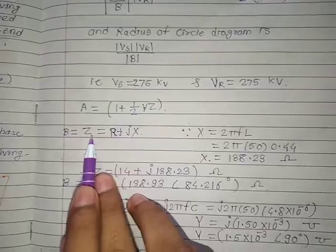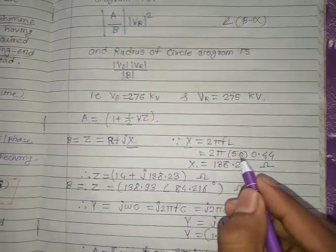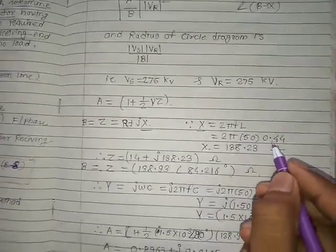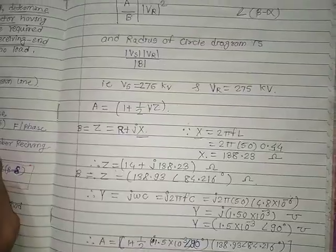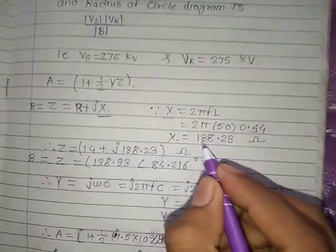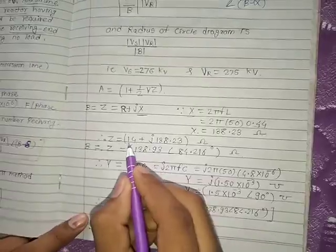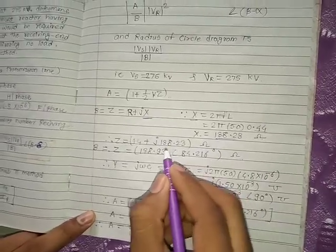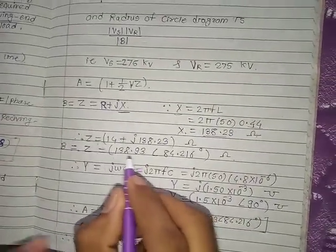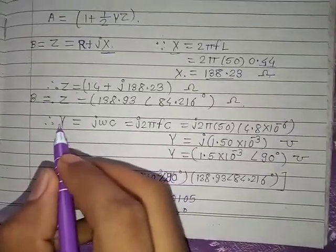A = 1 + YZ/2 and B = Z = R + jX. We need to calculate X: X = 2πfL = 2π × 50 × 0.44 = 138.23 ohm. So Z = 14 + j138.23, which in polar form is 138.98 ∠84.16° ohm.